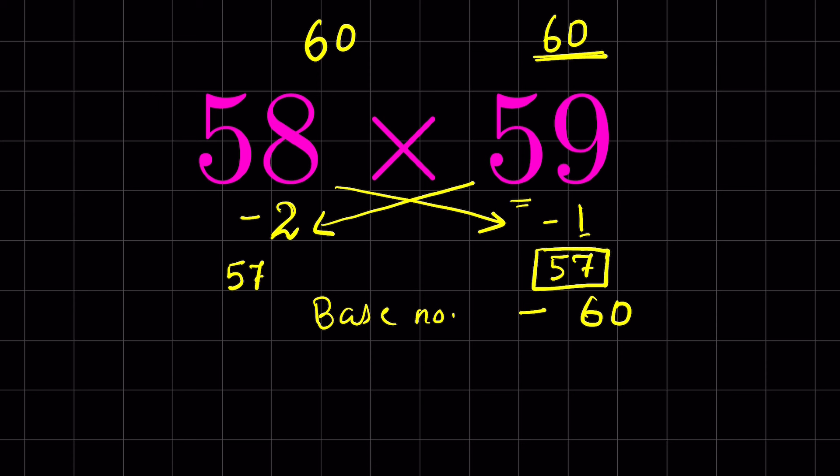So what we do, we subtract the numbers diagonally like this. We get the same result. Now you take 57 and multiply it with the base number. Much easier to multiply 57 times 6 than doing 58 times 59. 57 times 6 is 342 and 1 zero.